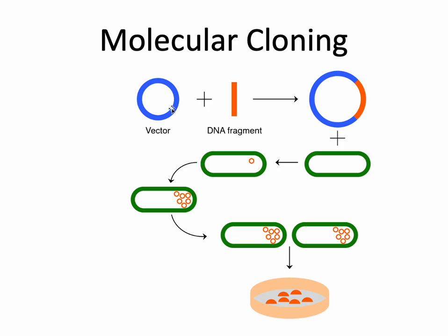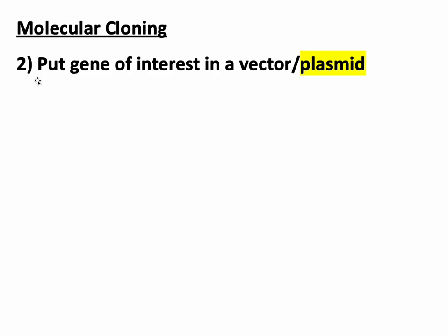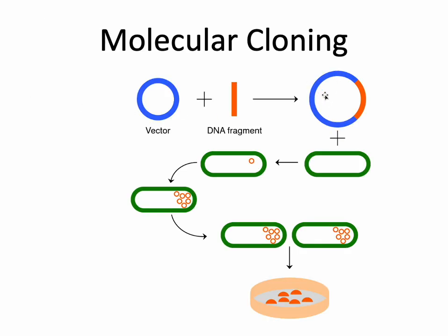This is where the vector — also known as a plasmid — comes into play. Plasmids are things that bacteria use to carry extra genes; it's something they recognize and are familiar with. So we're going to take our gene of interest, put it into the plasmid, and then give that to the bacteria. Step two of molecular cloning: put the gene of interest in a vector or plasmid. Plasmid is the key term here, defined as a small, optional, circular DNA molecule.